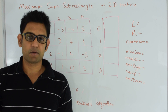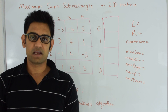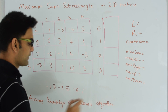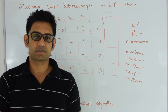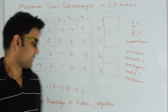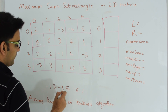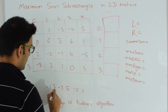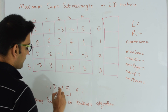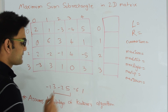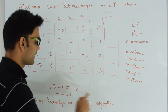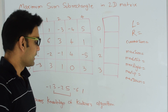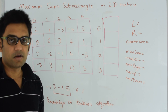We will use dynamic programming to solve this question. I'm assuming that our viewers are aware of Kadane's algorithm, which is used to find the maximum sum sub-array in a given array. For example, if I have the array: -1, 3, -2, 5, -6, 1, the maximum sum sub-array is 3, -2, 5, with sum 6. This can be found in O(n) time using Kadane's algorithm. Let's go back to our original question and see how we'll use Kadane's algorithm to solve this problem.